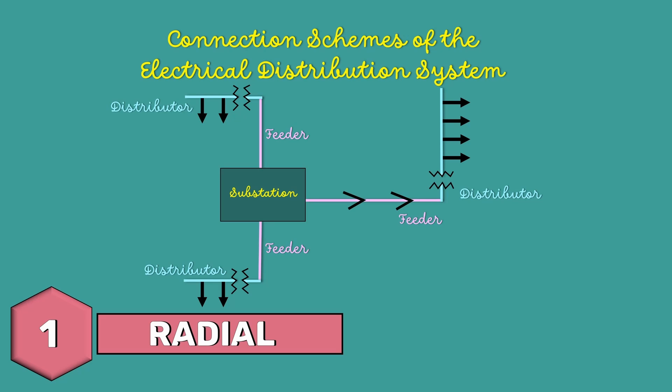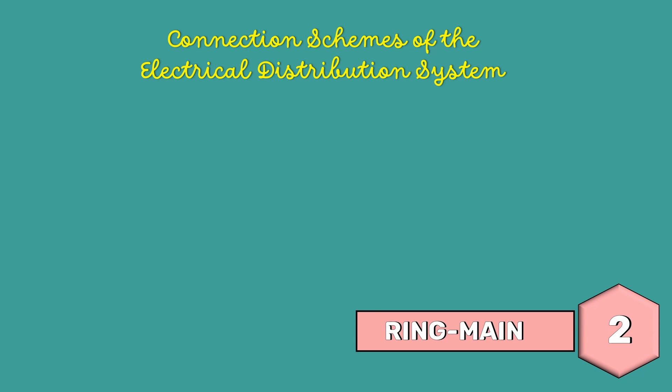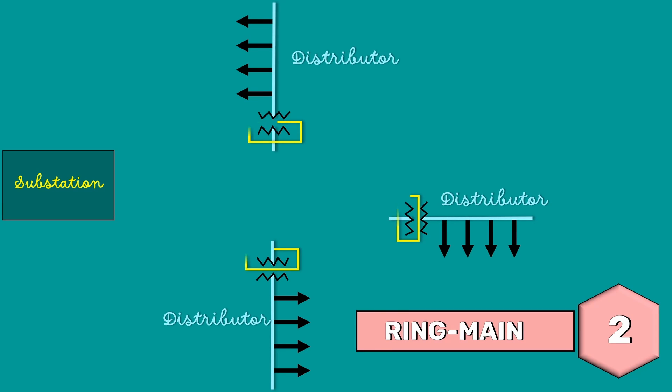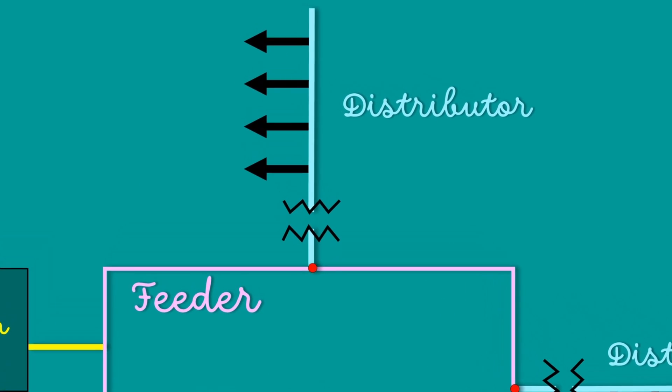The drawbacks of the system can be overcome by introducing a ring main system. In this system, the primaries of the distribution transformers form a loop. The loop circuit starts from the substation bus bar, makes a loop through the area to be served and returns to the substation. Here, the substation supplies a closed feeder. The distributors are tapped from different points of the feeder. This system is very reliable as each distributor is fed through two feeders.